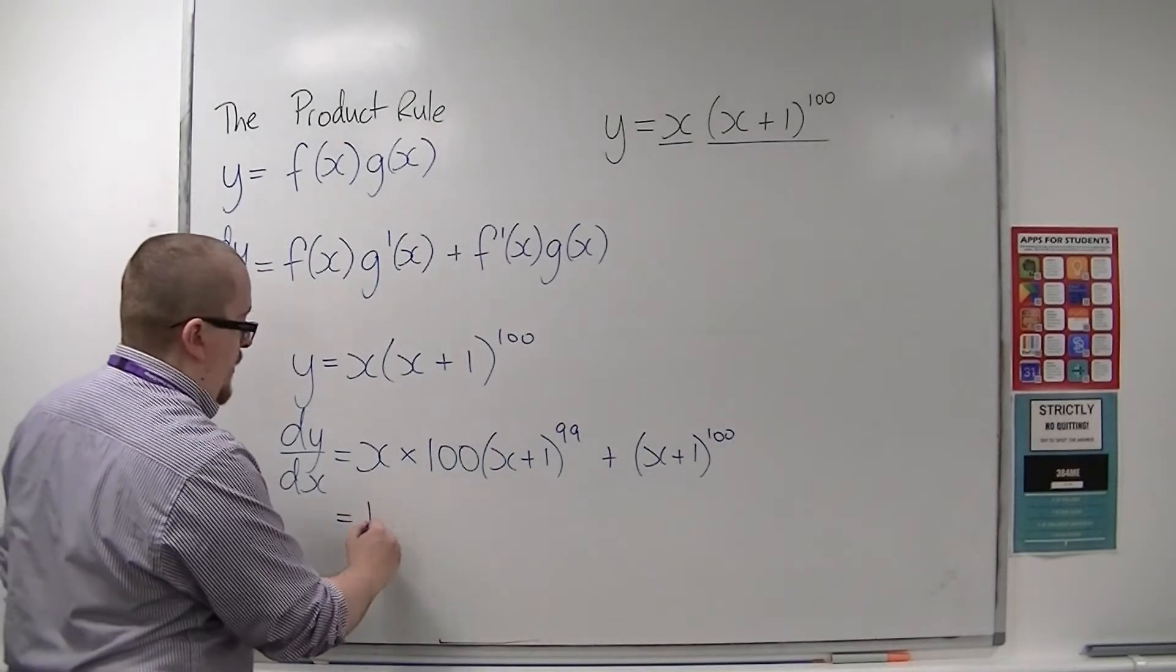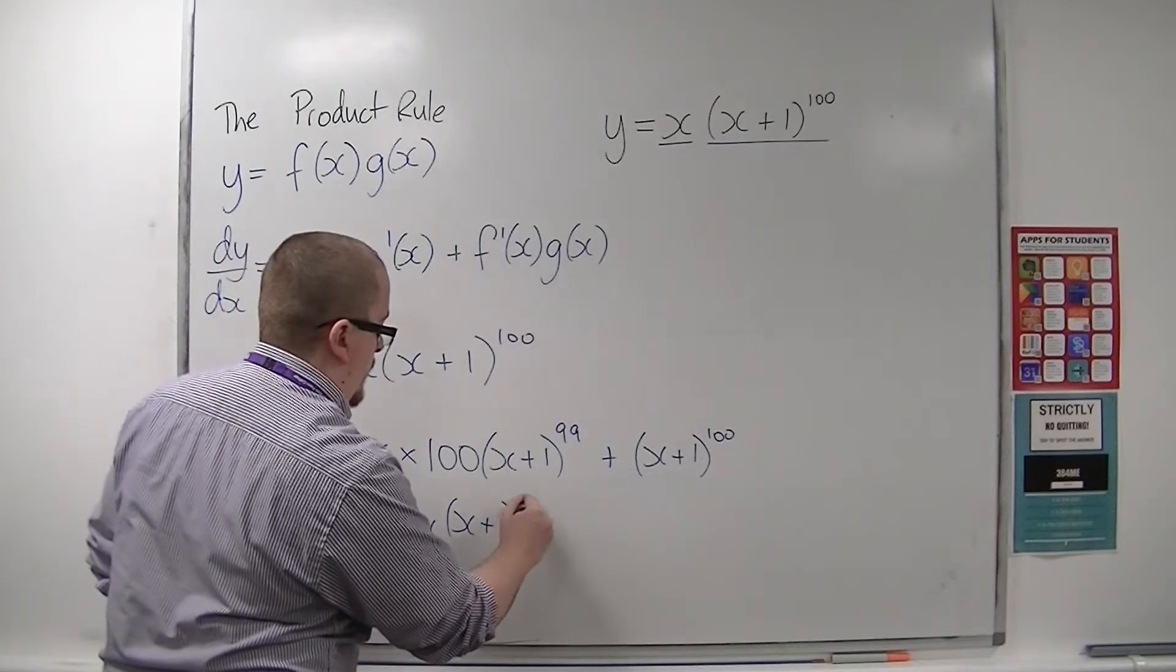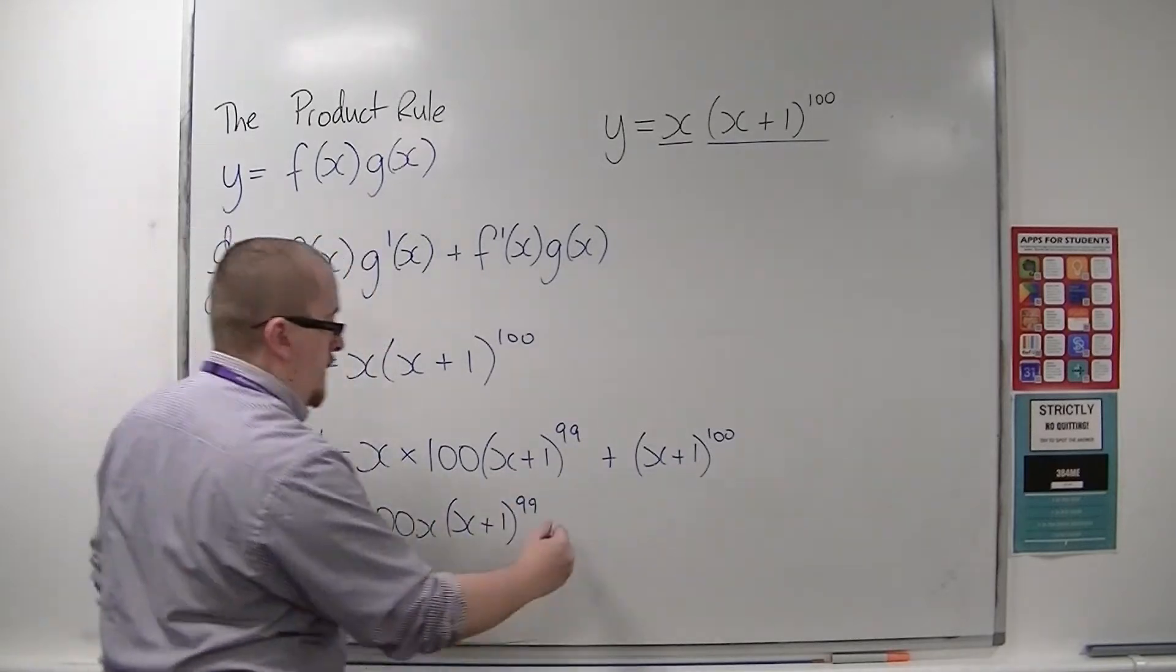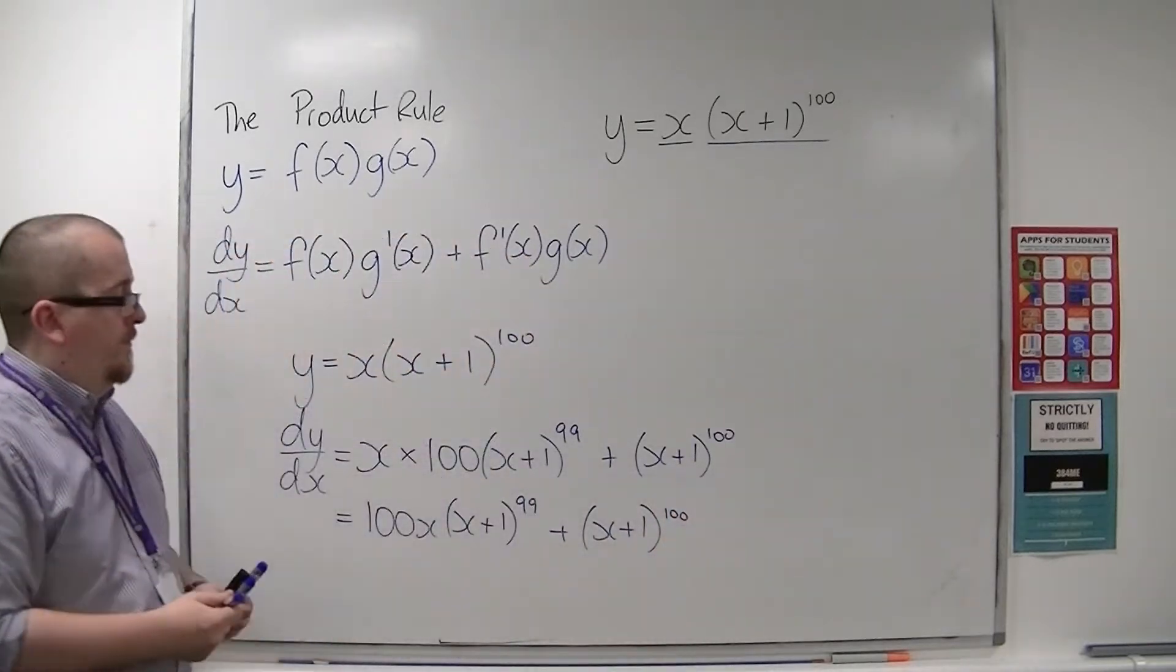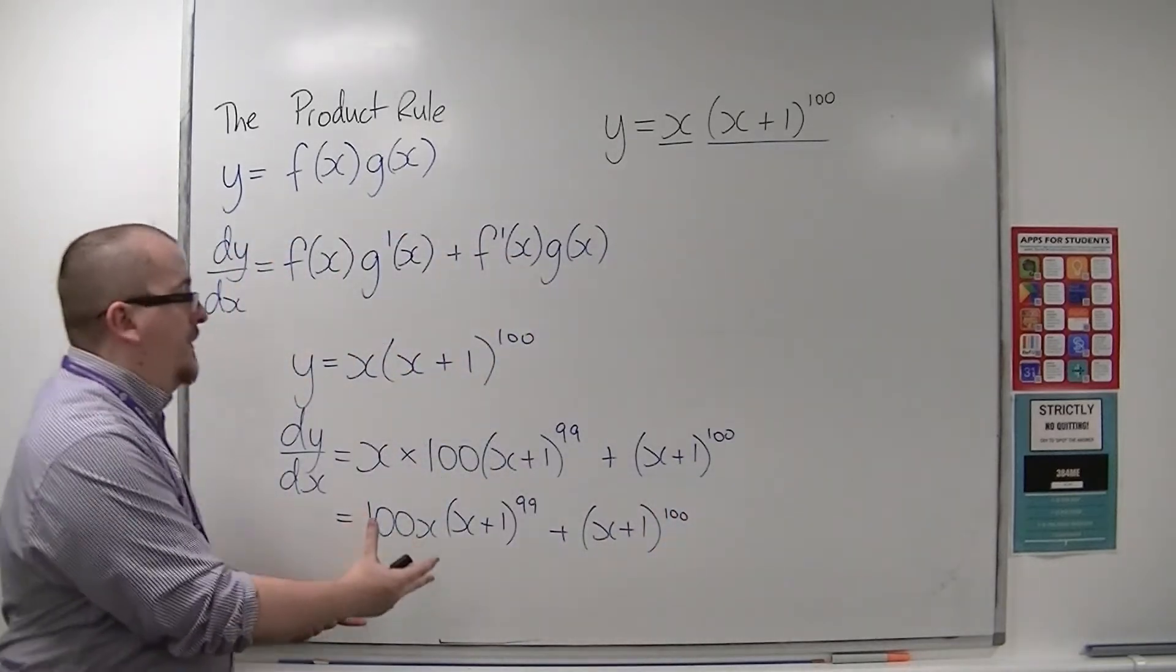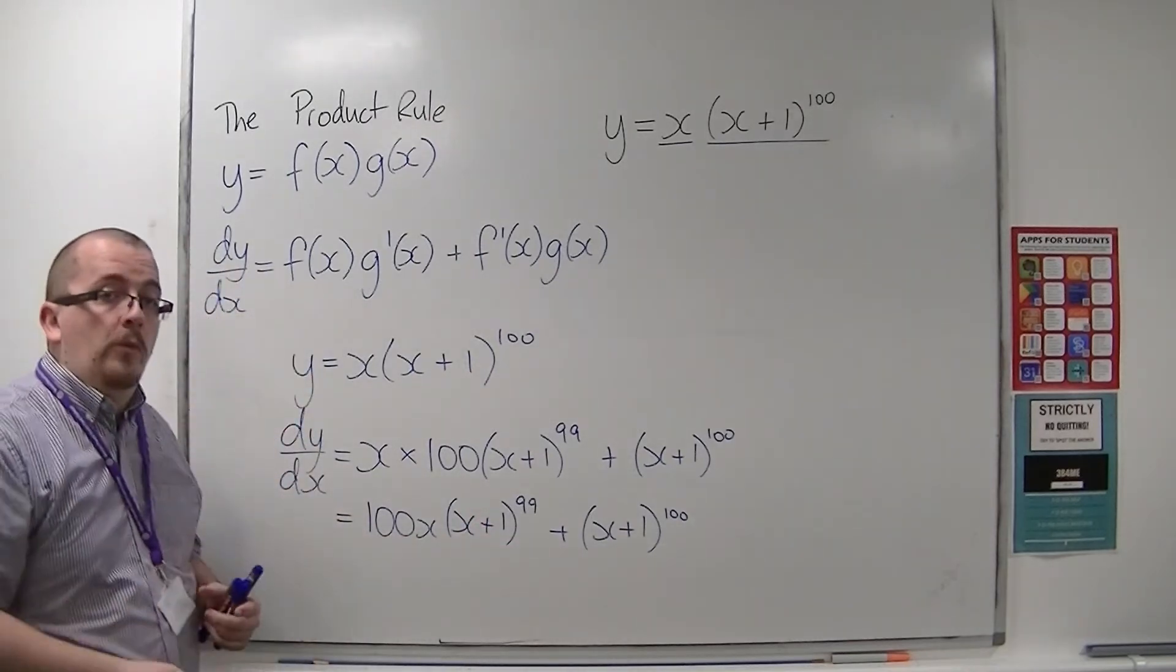And so if we simplify this, we have 100x times x plus 1 to the 99, plus x plus 1 to the 100. So that is the derivative of y is equal to x times x plus 1 to the 100.